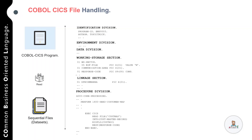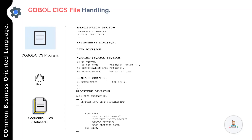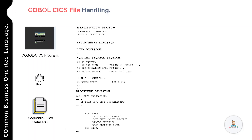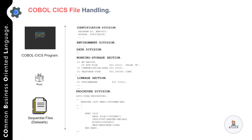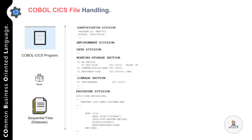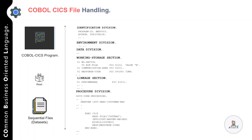The next two important sections are working storage section and linkage section, which are used to define variables used internally within the program. To use the communication area you need two definitions: one in the working storage section — named as communication area — and one in the linkage section. The working storage definition is named COMMUNICATION-AREA and the linkage section definition must be named DFH-COMM-AREA.